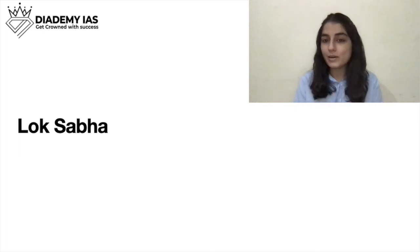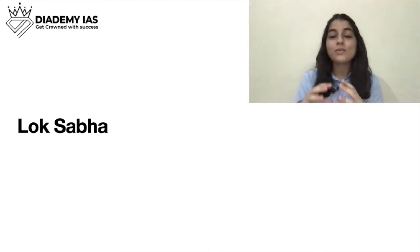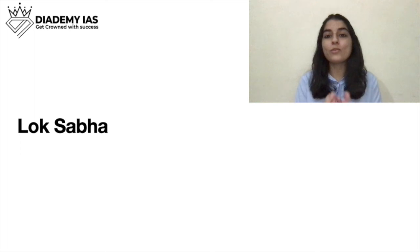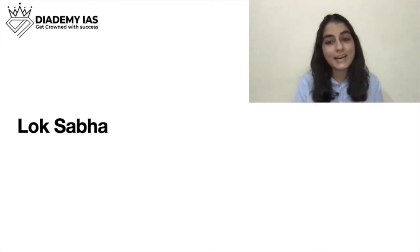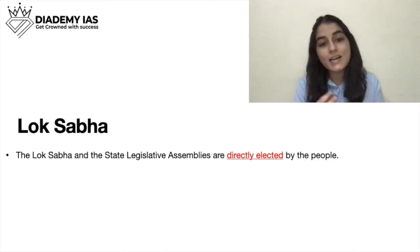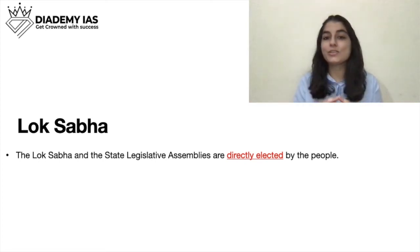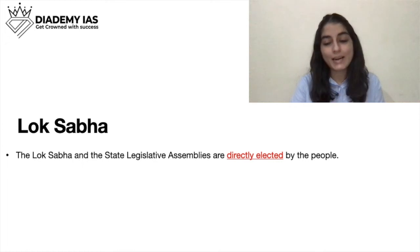This was all about Rajya Sabha — we discussed how it is a permanent house, how elections are held, and that there are nominated members. The Vice President is the ex-officio Chairman of Rajya Sabha, which we covered in the previous chapter. Now we will talk about Lok Sabha. The elections of Lok Sabha are held directly — we elect the members of Lok Sabha. State legislative assemblies also have direct elections.